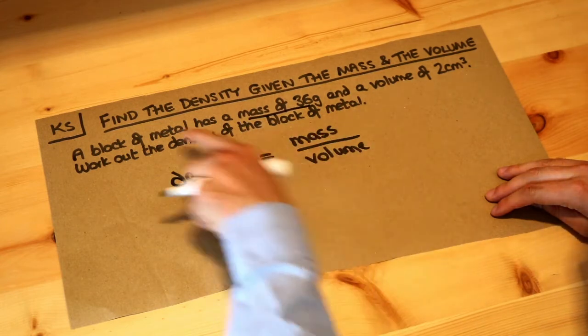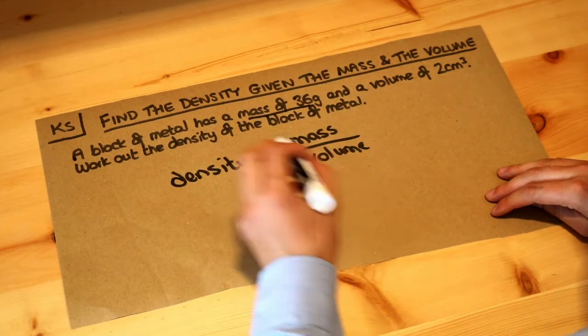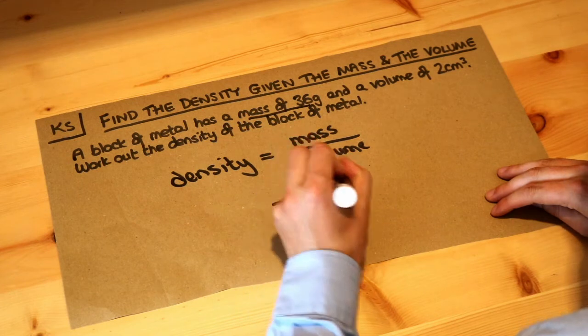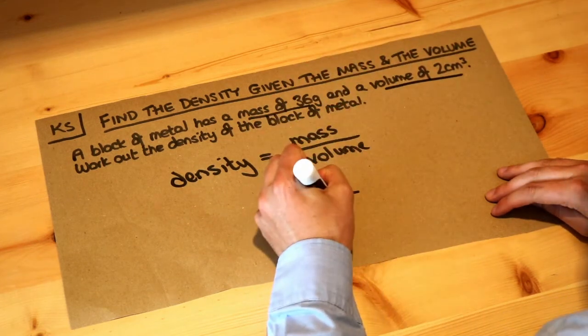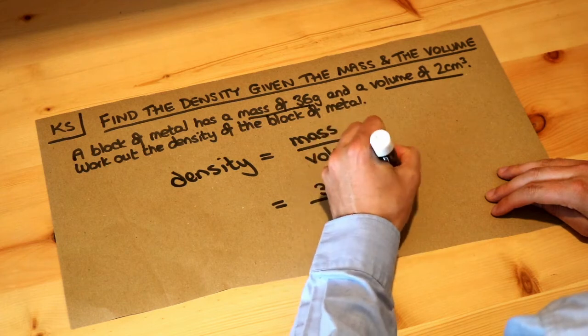We've got the mass of this block of metal which is 36 grams, so we've got 36 grams that's the mass divided by the volume which is 2, and 36 divided by 2 is 18.